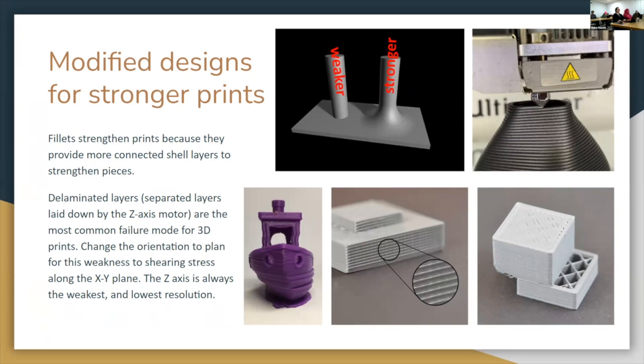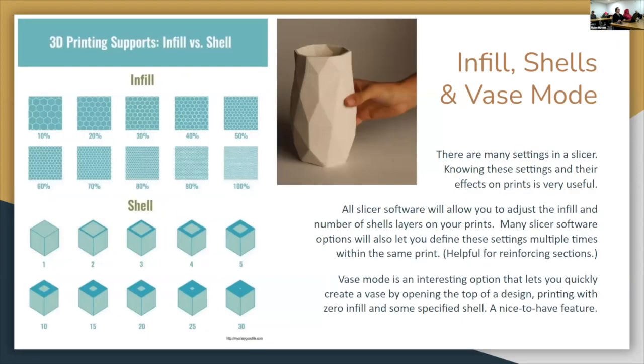You may choose to change the orientation of your pieces to get strength where you want it — that can be a helpful consideration if you're trying to make something strong. Or just print it on the Markforged and it all works the first time.